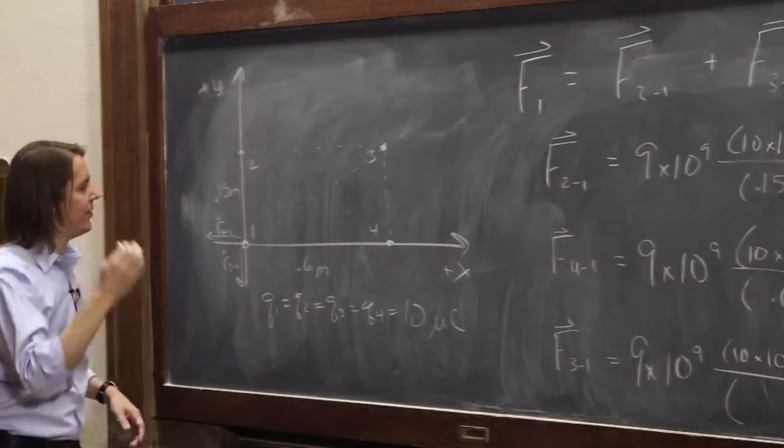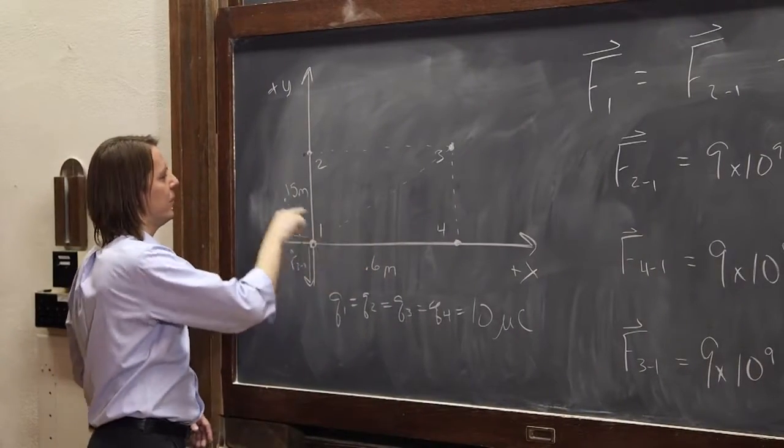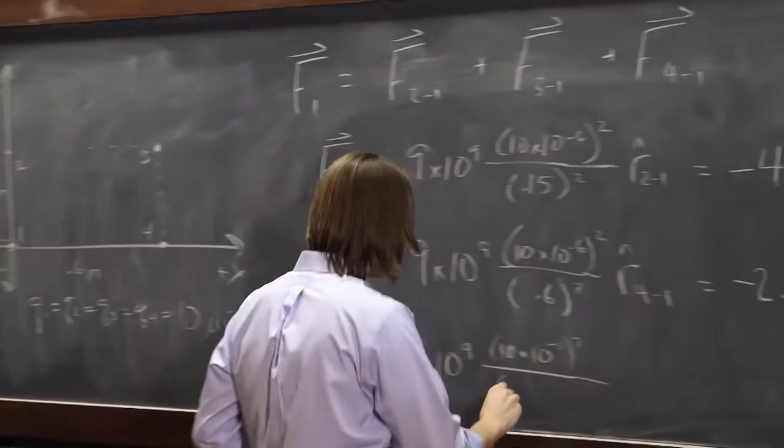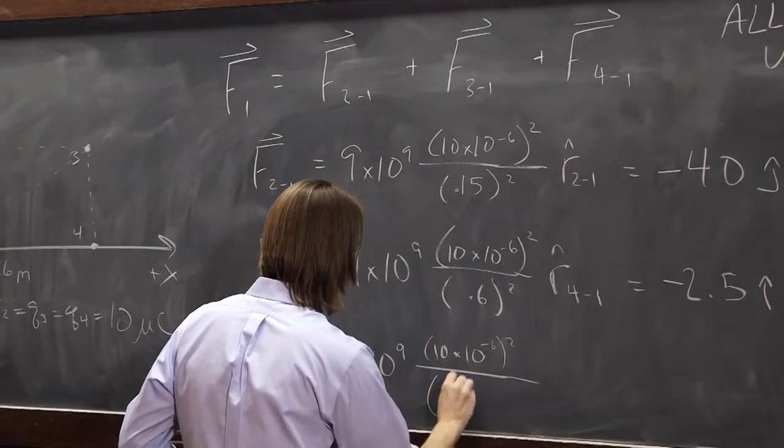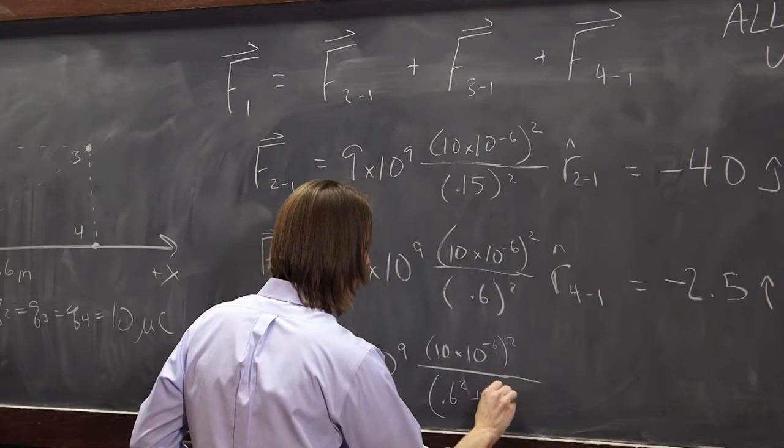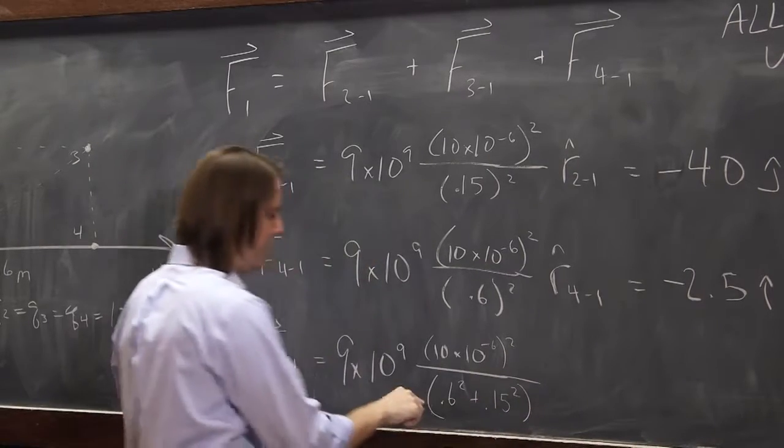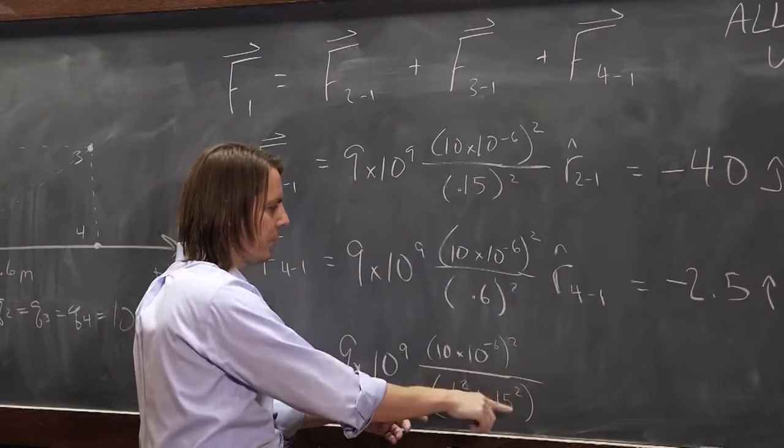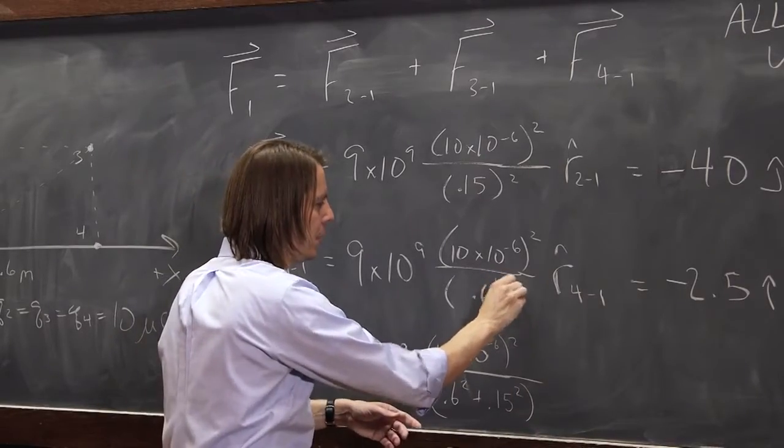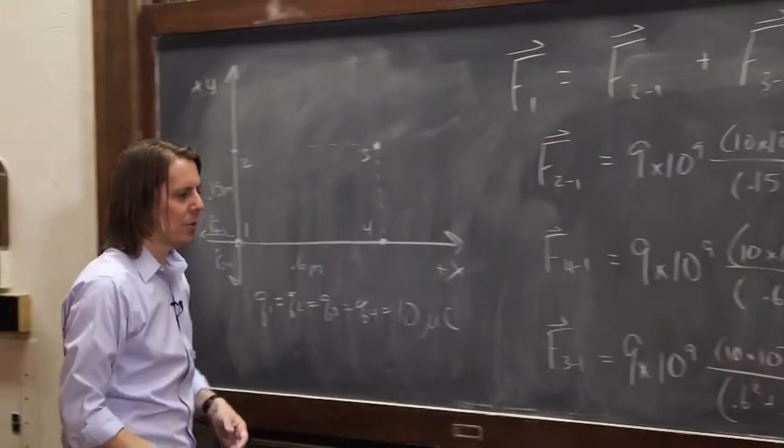So we can get that from the Pythagorean theorem. It's a square root of 0.6 squared plus 0.15 squared. But it's a square root and then it's squared, so I'm just going to leave it alone.